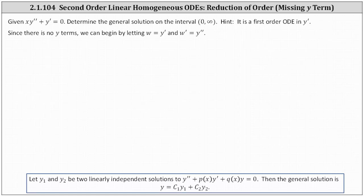Given the second order linear homogeneous differential equation, x times y double prime plus y prime equals zero, we're asked to determine the general solution on the open interval from zero to infinity.